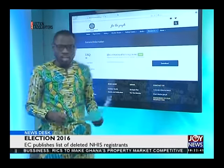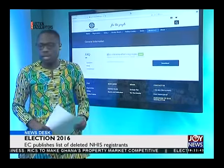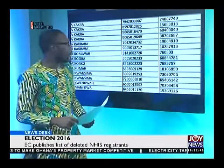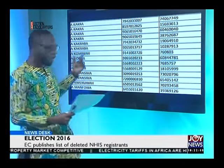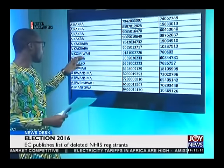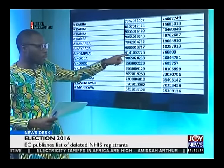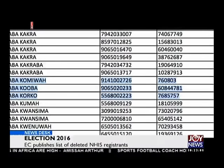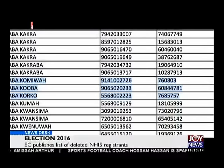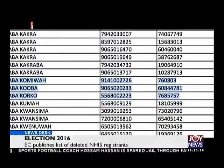So this is what I was speaking to you about. That appears to be the name of the person. The number 9141002726, highlighted in the middle, happens to be the voter ID of the person. In this instance, it comes with six digits for the National Health Insurance Card — 760803 — as the National Health Insurance Card number of the person.